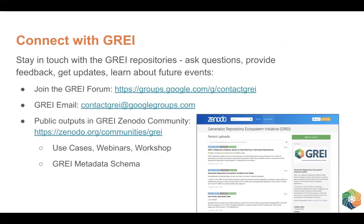We encourage you to help us jointly reduce the barriers to data sharing and support greater interoperability across the data landscape. Connect with GRAE and stay in touch with our repositories — we have a public Google forum you can join, as well as a contact email address if you have questions, are interested in getting involved or collaborating, or have feedback on any of our outputs. You can also sign up to learn about our future events. You can find all of our outputs in our GRAE Zenodo community, including those from a workshop in January of this year, a webinar series, the use case catalog, and the GRAE metadata schema. Thank you very much.